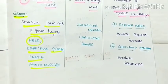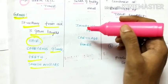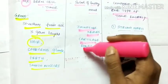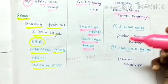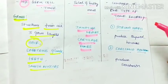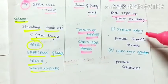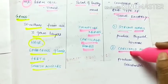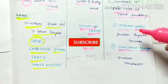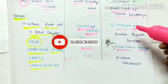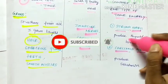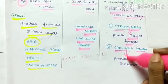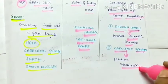In immature Teratoma, there is presence of immature nerves, cartilage, or bones grossly. In monodermal Teratoma, it is of two types: stroma ovary and carcinoid syndrome. In stroma ovary, this produces thyroid hormone, and in carcinoid syndrome, this produces a hormone called serotonin.